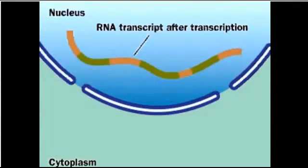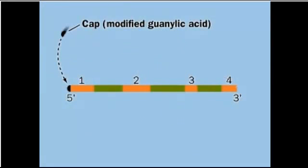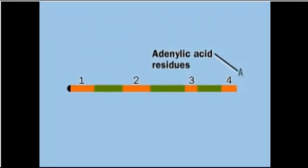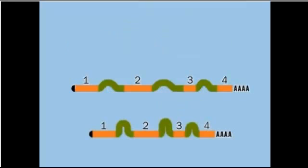Eukaryotic cells must process the RNA product of transcription to form a mature, translatable messenger RNA. The first step in RNA processing is capping — the addition of a special nucleotide to the 5' end. The second step is polyadenylation — the addition of a long tail of A's at the 3' end. A eukaryotic gene typically consists of both exons, regions that encode parts of the protein product, and introns, regions that are not represented in the product. The introns are transcribed along with the exons but they are spliced out as the third step in eukaryotic RNA processing.